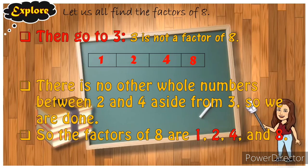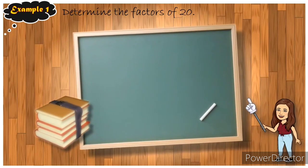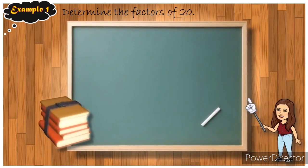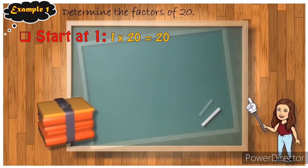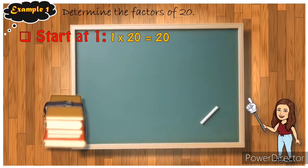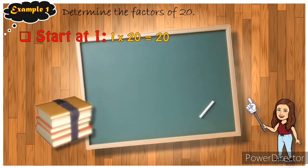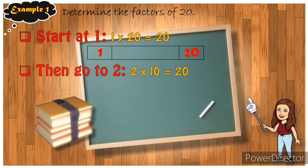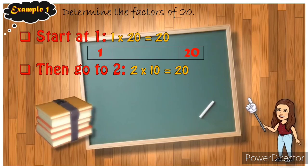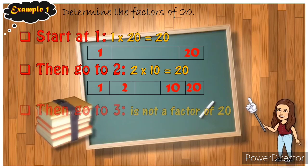Did you understand? Very good. Let's have another example. Determine the factors of 20. Start at one. Think of a number multiplied by one where the answer is 20. Very good, it's 20 itself. Therefore, one times 20 equals 20. Let's draw a table. We'll put two next to one and 10 before 20.